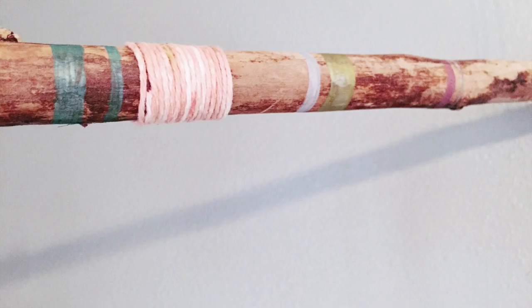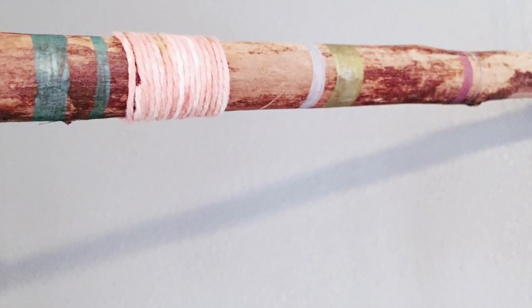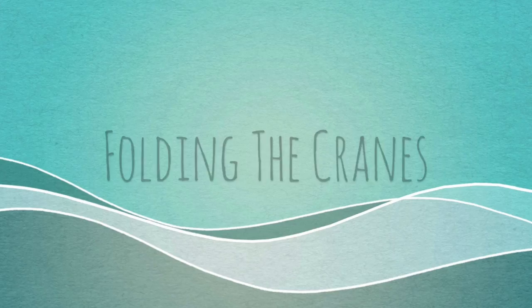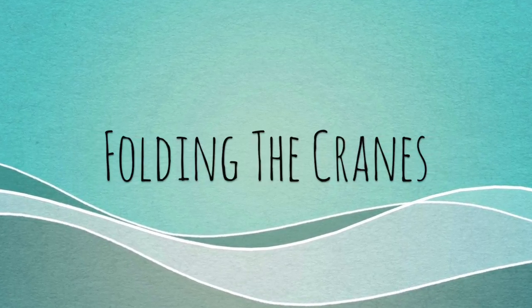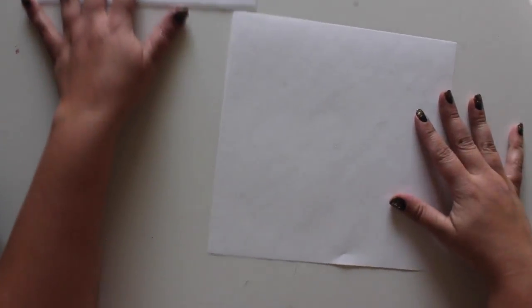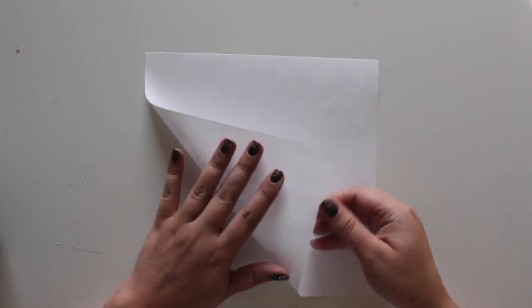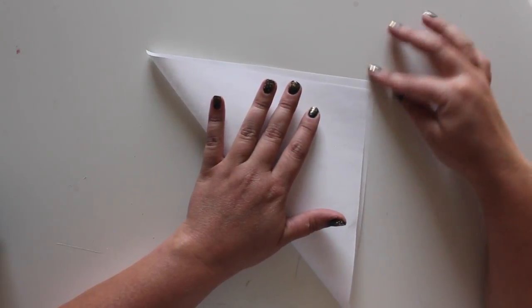I want to hang strings of origami cranes from the stick. I used a total of 13 cranes for this project. Here's how to fold an origami crane. Start with a square piece of paper. I'm using regular copy paper. Fold the paper in half diagonally.